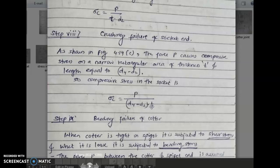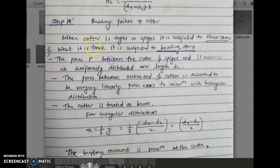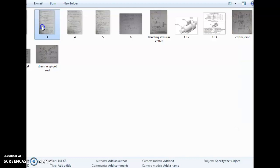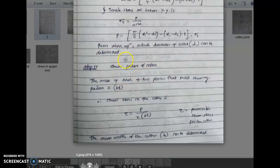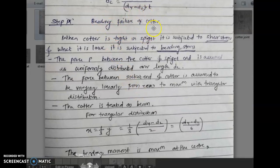Next step: bending failure of the cotter. When the cotter is tight in the spigot, it is subjected to shear stress — we saw this in step 4 (shear failure of cotter). When the cotter is loose, it is subjected to bending stress. Mostly the cotter is tight in a cotter joint, but if it is loose, it will be subjected to bending stress, and we need to calculate the bending stress for determination of bending failure.